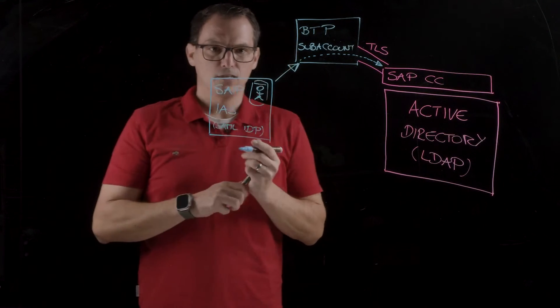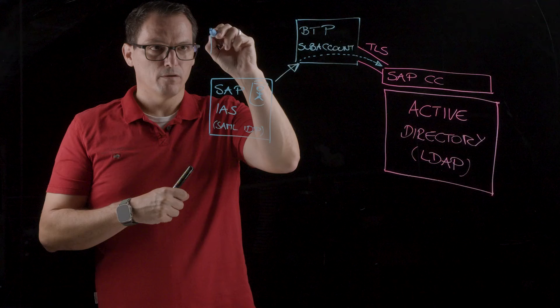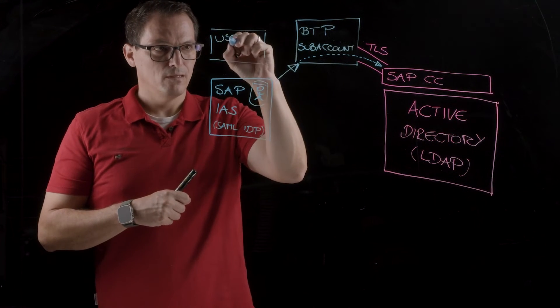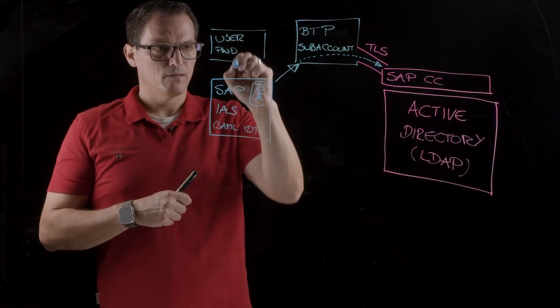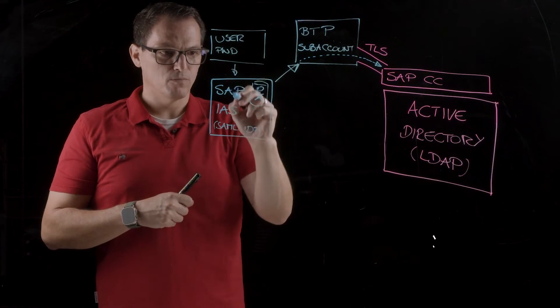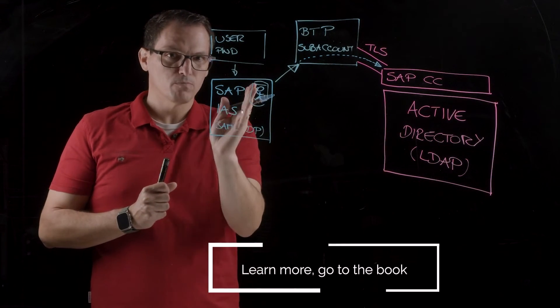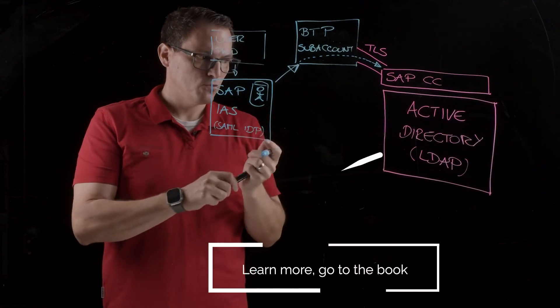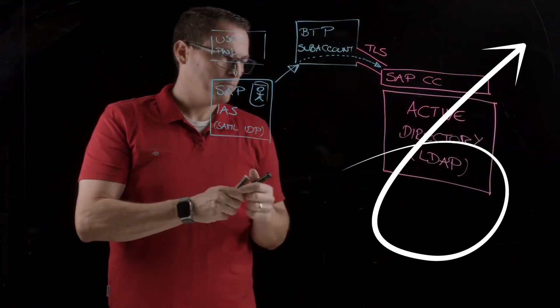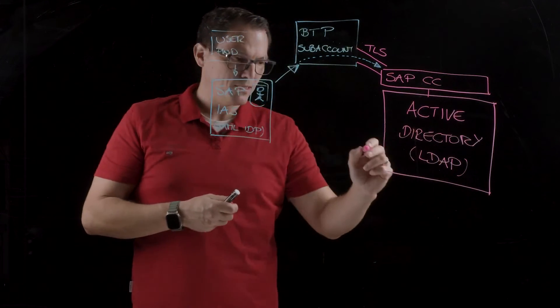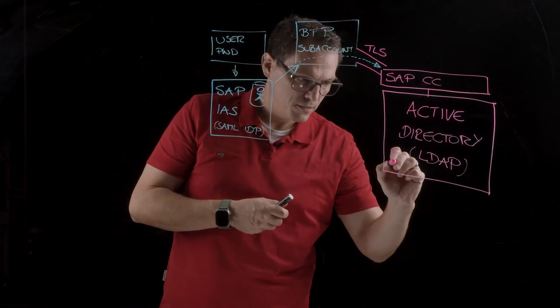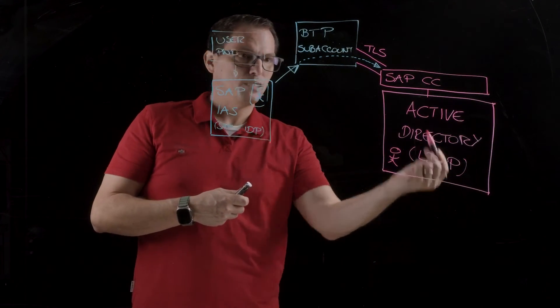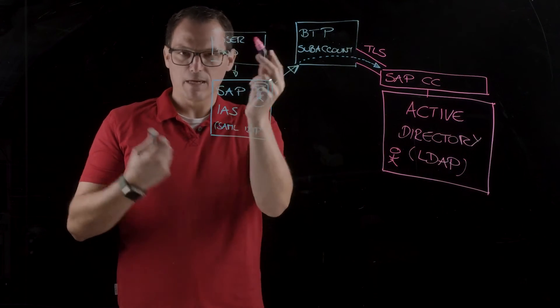And what's happening in the applications is if you would like to authenticate, you have a form where you can add or enter your user and your password. And the user and the password is taken from the identity authentication service and just proxied or transported through the BTP SAP Account and the cloud connector to the Active Directory. So here we have a connection also, and the authentication of the users is done here. And also the group assignment in the Active Directory is then returned back to the IAS and then back, of course, to the application.